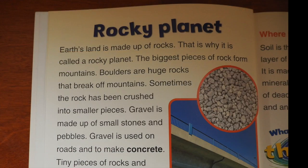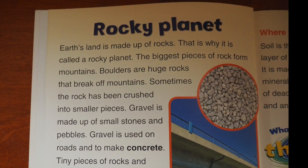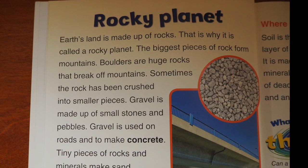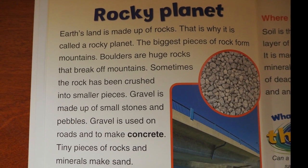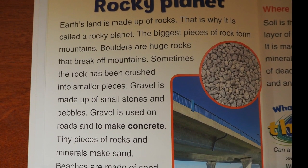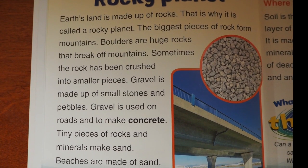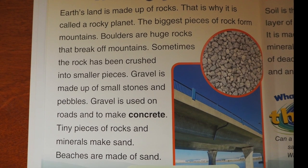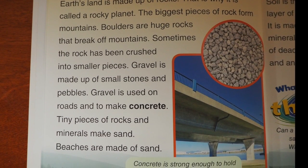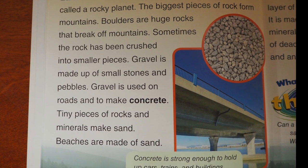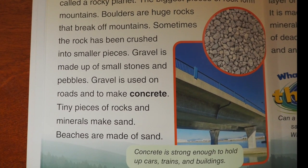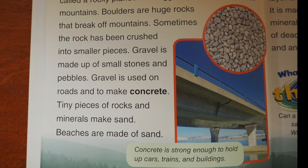Earth's land is made up of rocks — that is why it is called a rocky planet. The biggest pieces of rock form mountains. Boulders are huge rocks that break off mountains. Sometimes rock is crushed into smaller pieces. Gravel is made up of small stones and pebbles, and is used on roads and to make concrete. Tiny pieces of rock and minerals make sand, and beaches are made up of sand.